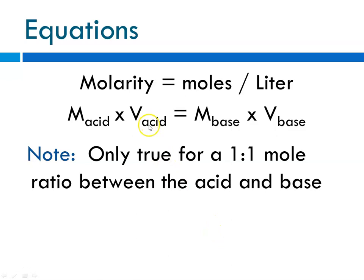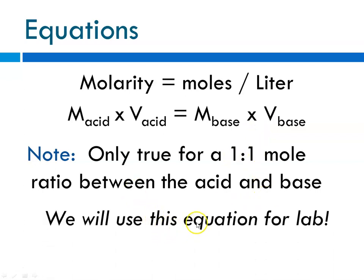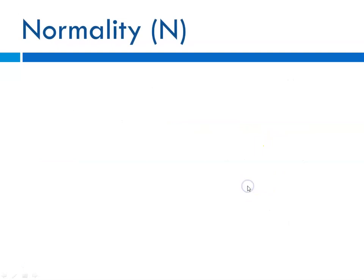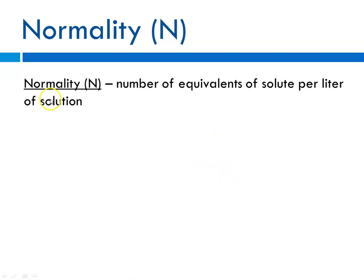For instance, if you were titrating HCl with NaOH, that's a one-to-one ratio and you could use this equation — this is the equation used in lab for titrating hydrochloric acid with sodium hydroxide. However, if the ratio of acid to base was not one-to-one — for example, titrating sodium hydroxide with sulfuric acid, which has two hydrogens — that's not a one-to-one ratio.